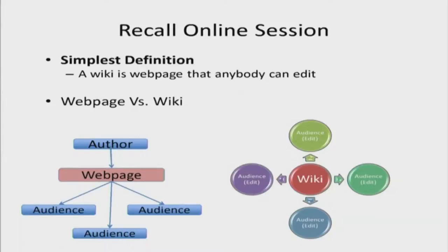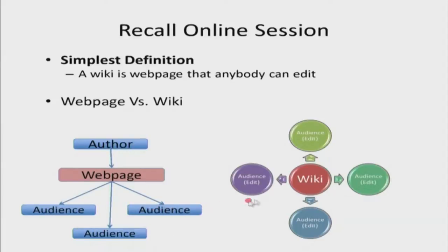In the online session you would have seen that the simplest definition of a wiki is that it is a web page that anybody can edit. A normal web page will have a single author and is visible for the audience, whereas in a wiki the audience can edit it. This is the simplest definition of a wiki.